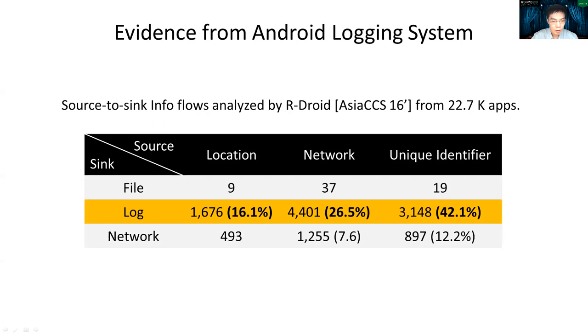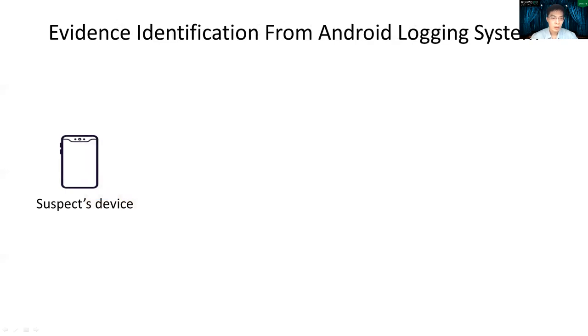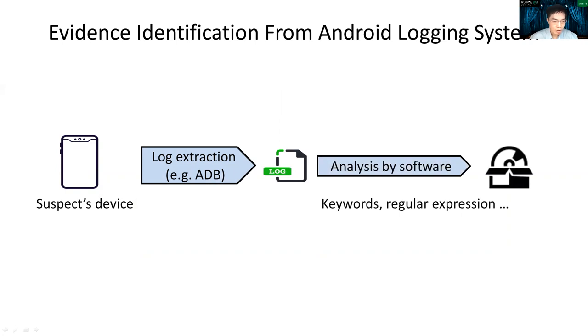That is to say, when a forensic analyst investigates the mobile device, log message has the highest chance to contain useful digital evidence. Here, let's work through the scenario of evidence identification from logs. First, the forensic investigator dumps the log from the suspect device by using tools such as Android debug bridge. Next, with the extracted log messages, the investigator can adapt software to search by keyword or regular expression to locate and retrieve the evidence.